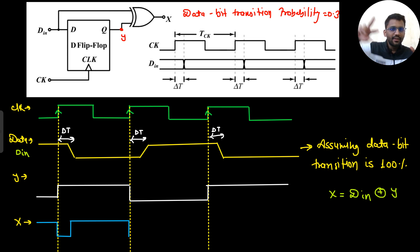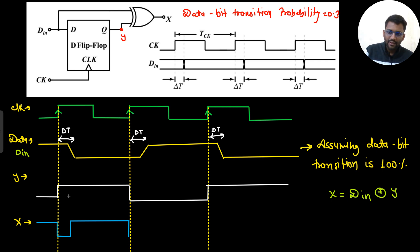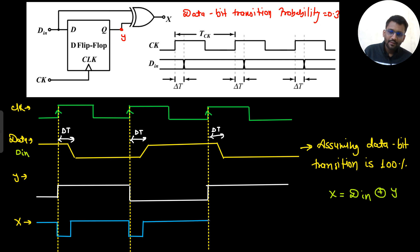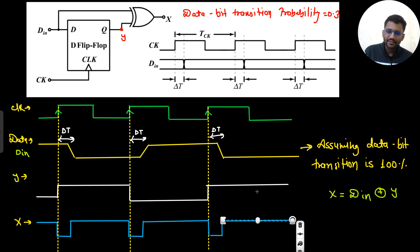When inputs are the same, XOR gives 0; when different, gives 1. So after delta T: inputs are 1 and 1 — output is 0. Then when D_in = 0 and Y = 1 — output is 1. Then D_in = 1 and Y = 0 — output is 1. Then D_in = 1 and Y = 1 — output is 0. Then D_in = 0 and Y = 1 — output is 1. This cycle repeats.